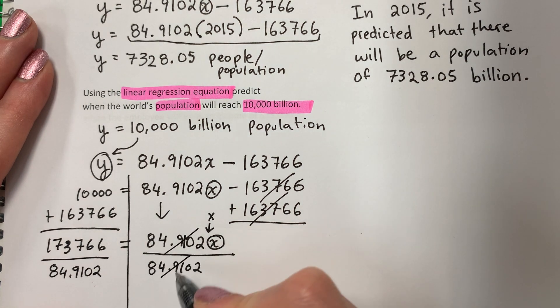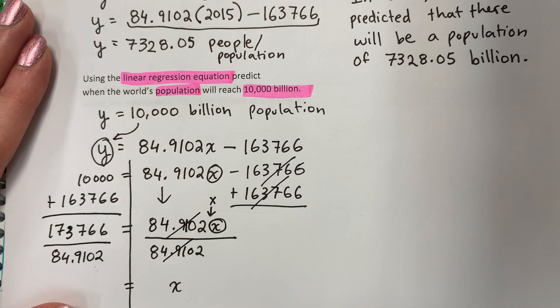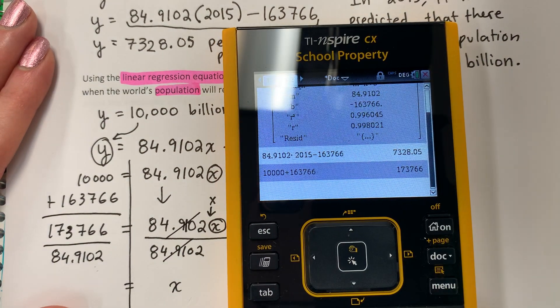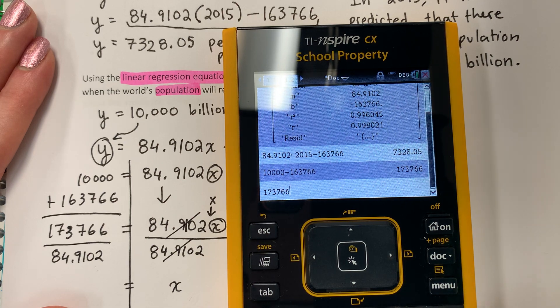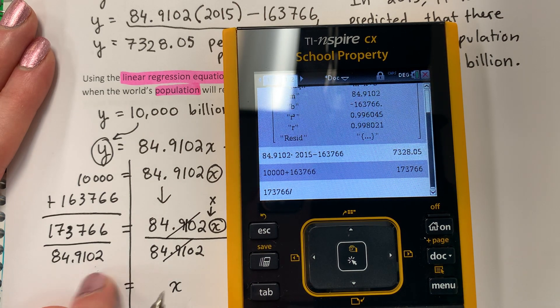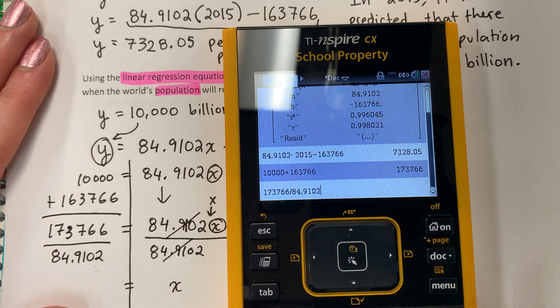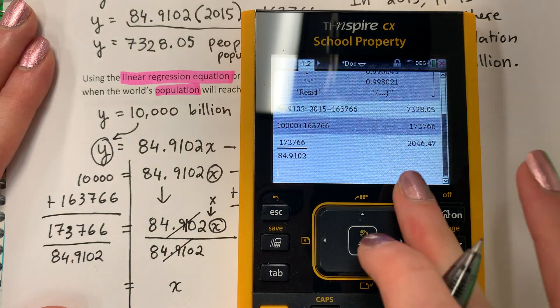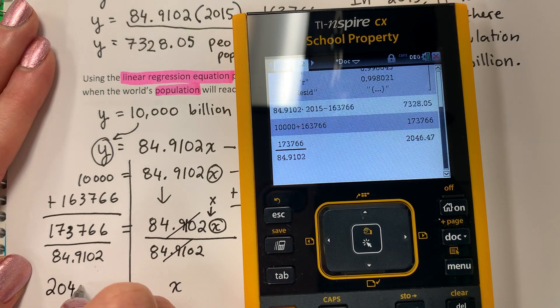This cancels. It's one. Es uno. X equals. Let's put that in the calculator. 173,766. Divided by this number. 84.9102. Enter. I get this number. This is the number.